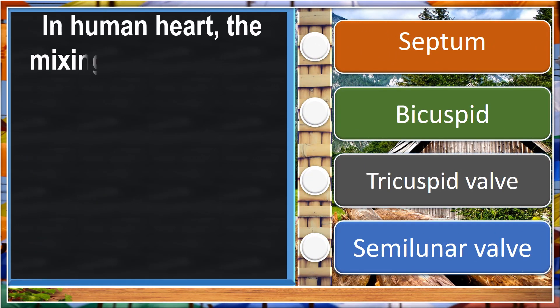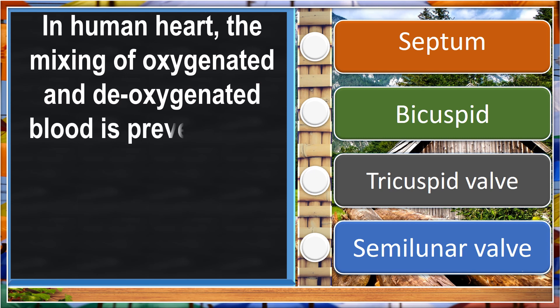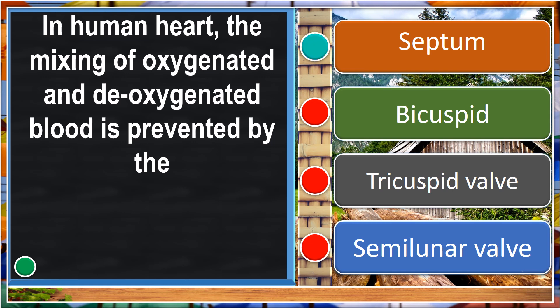In the human heart, the mixing of oxygenated and deoxygenated blood is prevented by the septum.